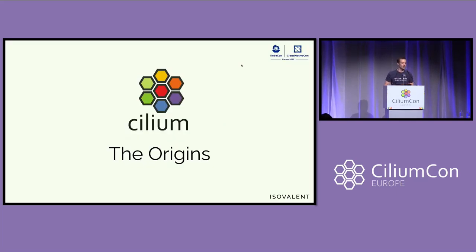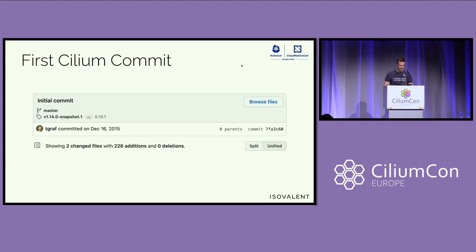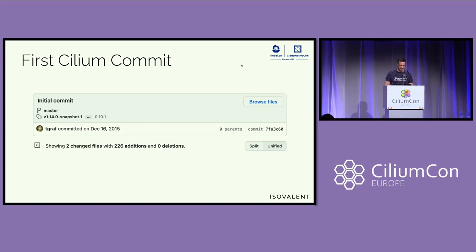This was the first commit — way back. In December 2015, we started the Cilium project with a GitHub commit. Very innocent.